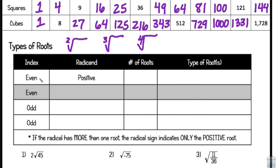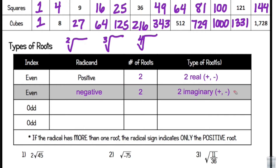First we'll look at the index to see if it's even. If it's even and the number inside the radicand is positive, we know that there will be two roots, and they will both be real roots — a positive and a negative. If it's an even index and a negative number inside the radicand, we do have two solutions; however, they're imaginary. We are not going to be doing those in this lesson. For the purposes of this unit, we're only going to discuss the even index with only the positive root.